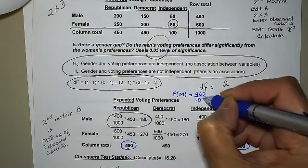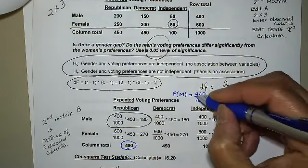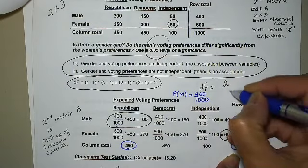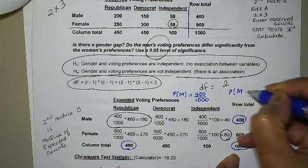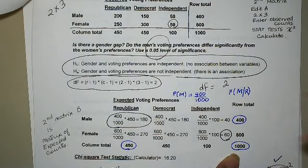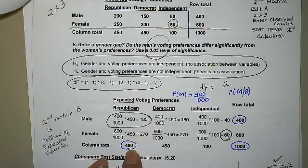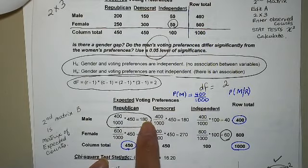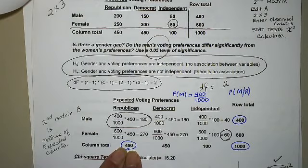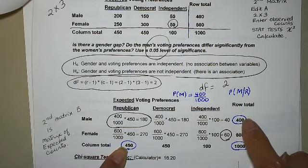So probability of male is equal to 400 over 1,000. And I want this probability to remain 0.4 for probability of male given Republican, which would be this over that, 180 over 450.